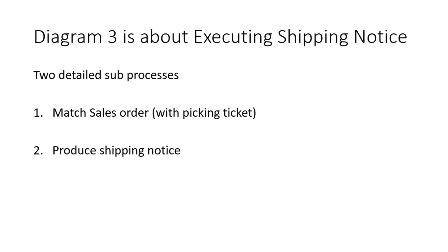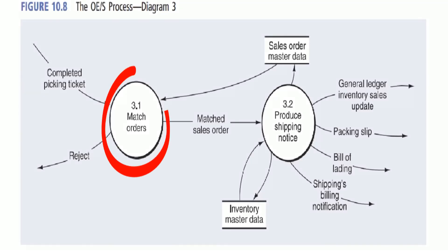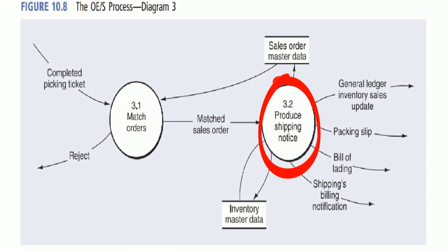The shipping notice is the third process and can be replaced with two sub-processes: match sales order with picking ticket, and produce shipping notice. The sales order is matched with the picking ticket — sales order master data is inquired upon to verify the sales order was placed; otherwise it is rejected. Once matched, the shipping notice is produced: inventory master data is checked for sufficient inventory, a bill of lading is prepared, a shipping billing notification is prepared, and a packing slip is prepared. Finally, inventory master data is updated to decrease the inventory, and the general ledger inventory and sales accounts are updated accordingly.